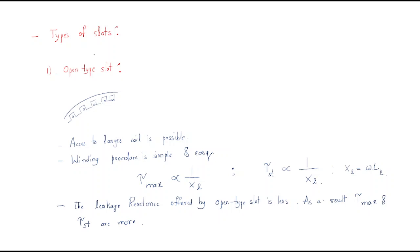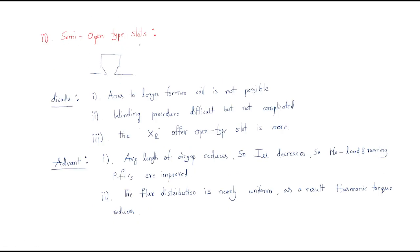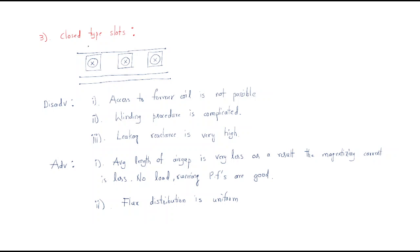We have some types of slots available. The first type is the open type slot, which looks like it is open. The second type is the semi-open type slot, and the third is the closed type slot. We have these three types of slots, and the winding is carried within them.